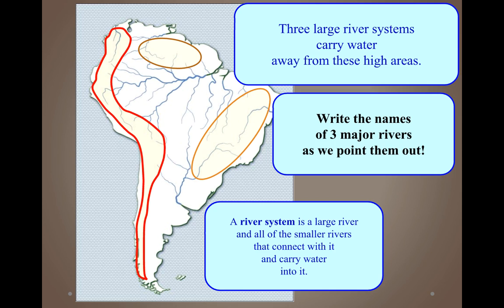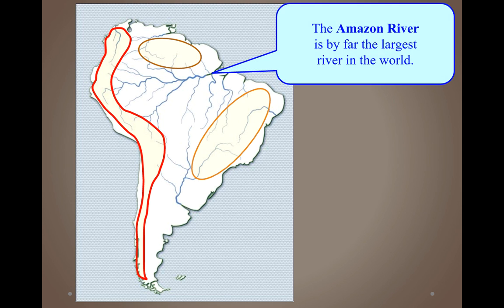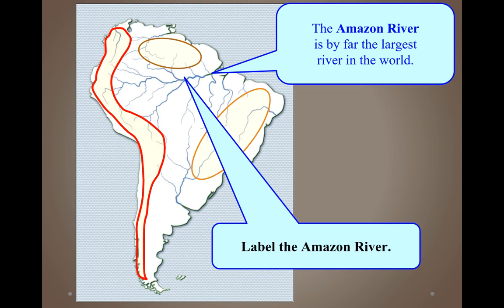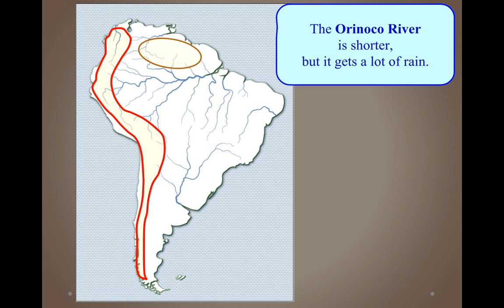Now let's look at river systems. A river system is a large river and the smaller rivers that connect with it to carry water into it. The Amazon River is by far the largest river in the world in terms of the volume of water — it is unbelievably large. Label the Amazon River on your map now. Thinner rivers carry water from all three highland regions into the wider Amazon, making it a large, interconnected waterway.